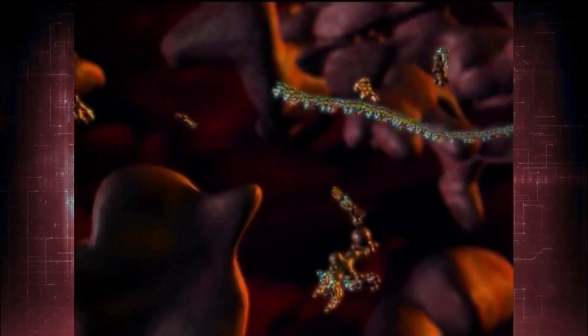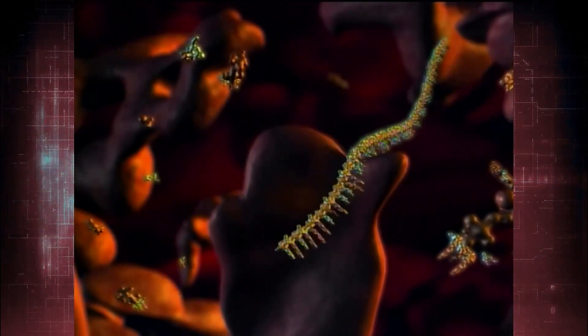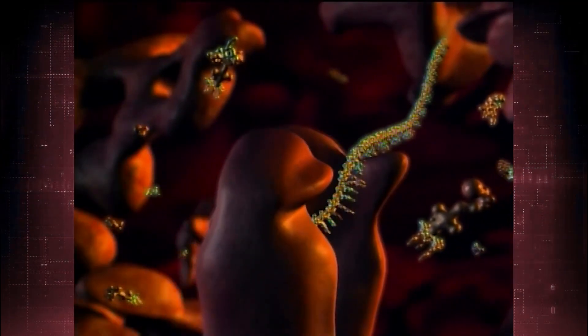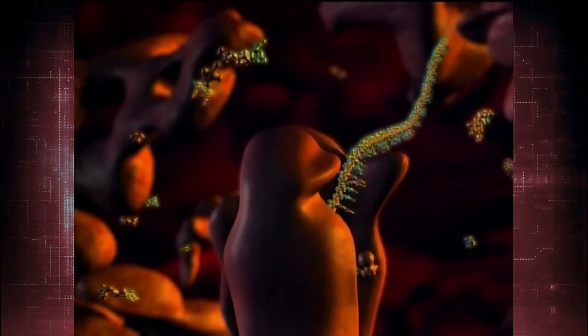The messenger RNA strand is directed to a two-part molecular factory called a ribosome. After attaching itself securely, the process of translation begins.